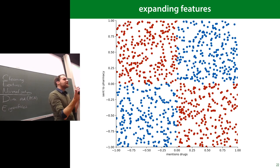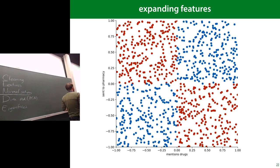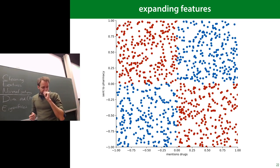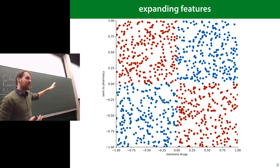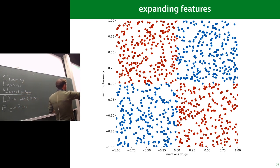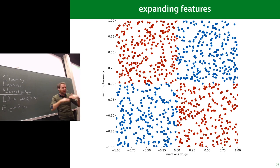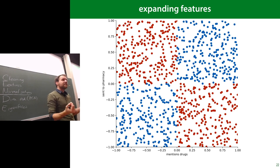So we have two interrelated features: you need the value of one to interpret the other. If it mentions drugs and is sent to a pharmacy it's ham; if it doesn't mention drugs and isn't sent to a pharmacy it's ham; otherwise it's probably spam. A linear classifier can't do this — there's no line that separates these two classes, even though they're neatly separable.